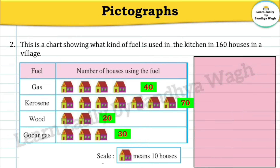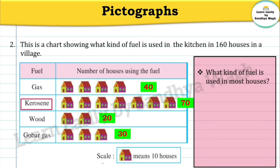Now the question: What kind of fuel is used in most houses? We can see that 70 houses use kerosene — that is the highest number. So the answer will be: Kerosene is used in most houses.